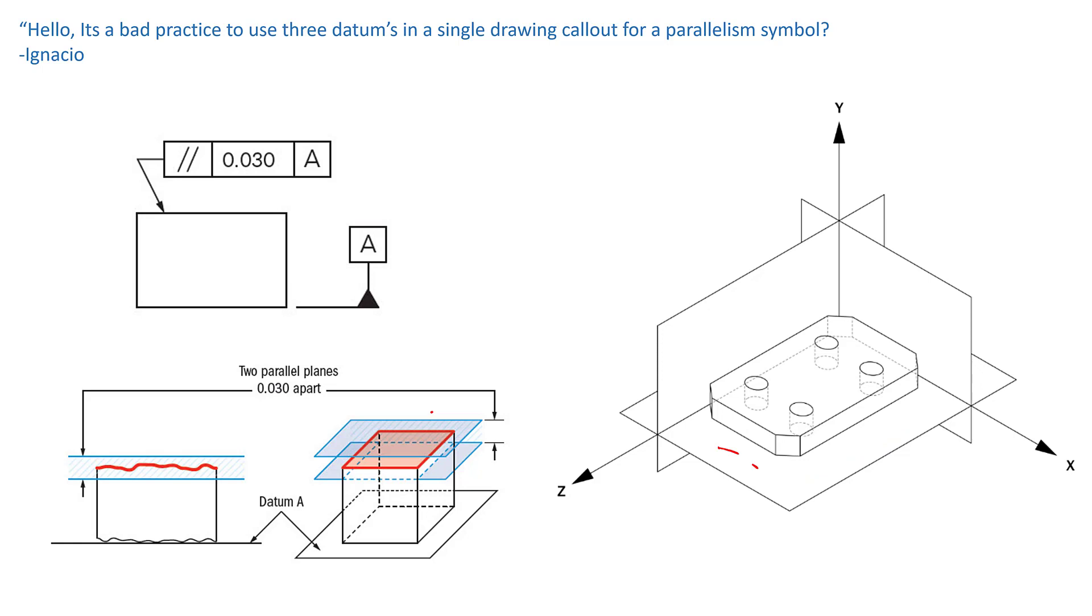But if that's A, it will be parallel, or the tolerance zone is easily parallel to A, right? So that's A down there on the bottom. So the top surface, which on the part, this top surface that we would be applying it to, must be parallel within 30 microns back to A.